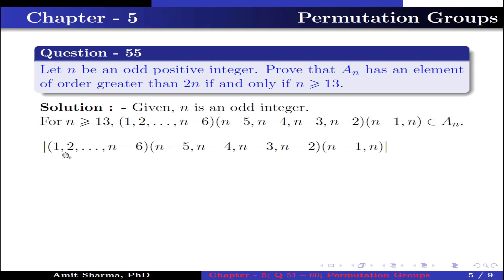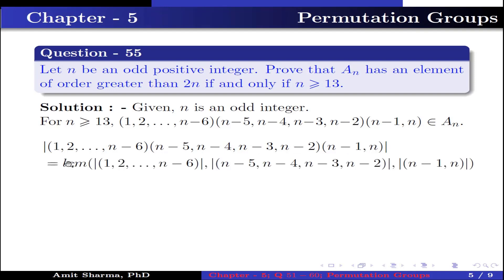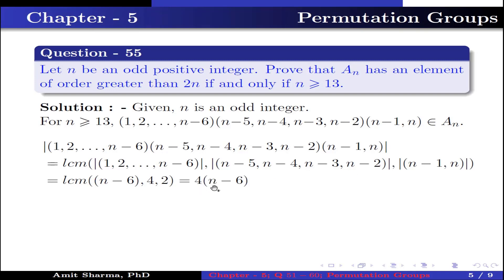The order of the permutation (1 2 ... n−6)(n−5, n−4, n−3, n−2)(n−1, n) equals the lcm of the order of (1 2 ... n−6), the order of (n−5, n−4, n−3, n−2), and the order of (n−1, n), which is lcm(n−6, 4, 2). This equals 4(n−6), which is greater than 2n.